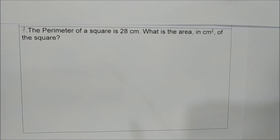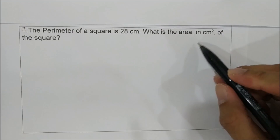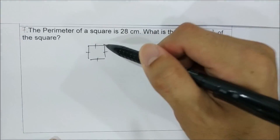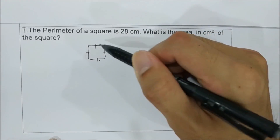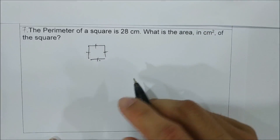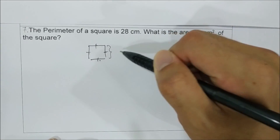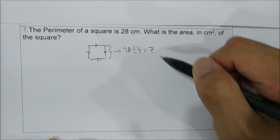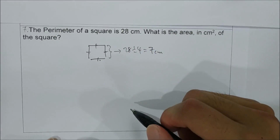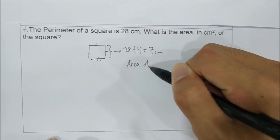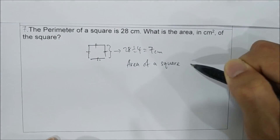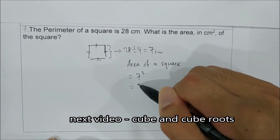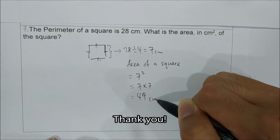Question 7: the perimeter of a square is 28 cm. What is the area of the square? Since a square has four equal sides, one side equals 28 divided by 4, which is 7 cm. To find the area, area of a square equals the square of the side: 7 times 7 equals 49 cm².